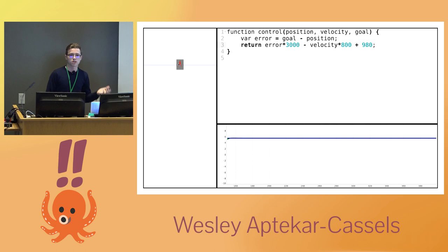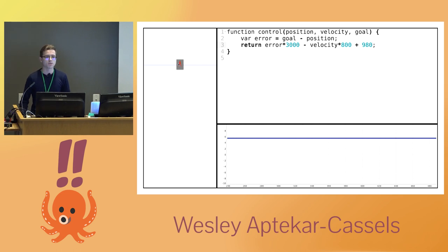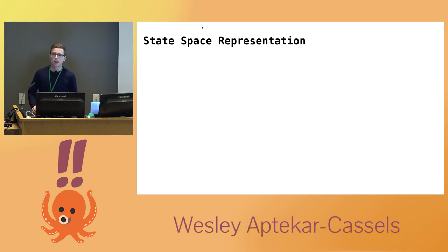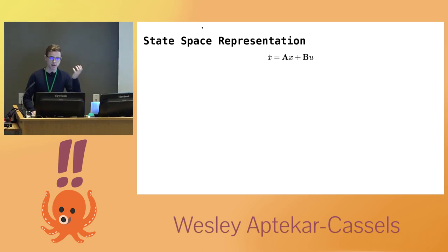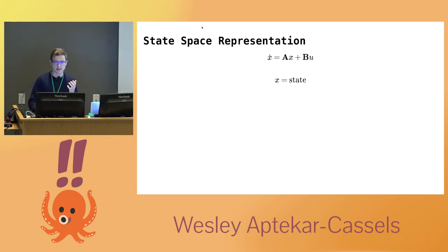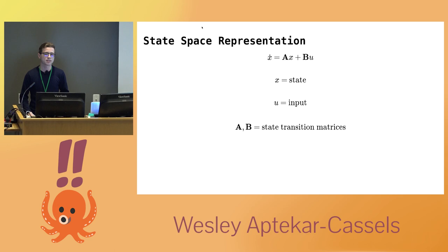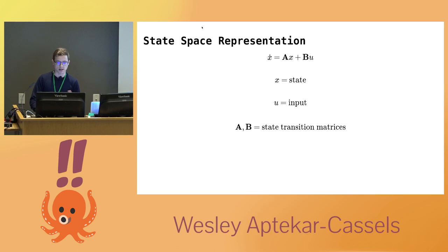I talked a bit about the mathematical underpinnings. How did I write this simulation? The answer is there's some math involved — we make what's called a state-space representation. We take all the variables that represent the state of the system and do some math. There's this equation that looks complicated but actually isn't: x-dot equals Ax plus Bu. X is the state, U is the input, and A and B are called state transition matrices. A represents how the system changes over time if you don't apply any force, and B represents how applying force changes the system. Let's figure out what the values of A and B are for our elevator.